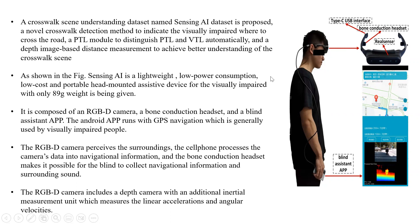As you can see in the figure, the Sensing AI is a lightweight, low power consumption, low cost, and portable head-mounted assistive device for the visually impaired, weighing only 89 grams. It is composed of an RGBD camera — that is a red-green-blue and depth camera — a bone conduction headset, and a blind assisting app. The Android app runs GPS navigation. The RGBD camera perceives the surroundings, the cell phone processes the camera's data into navigational information, and the bone conduction headset allows the blind to collect navigational information and surrounding sound. The RGBD camera also includes a depth camera with an inertial measurement unit which measures linear accelerations and angular velocities.